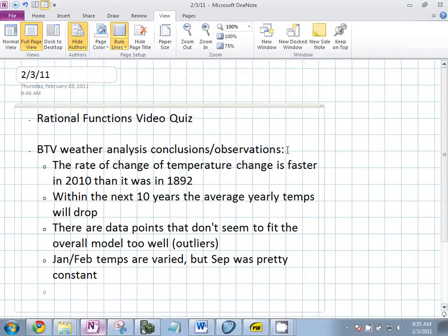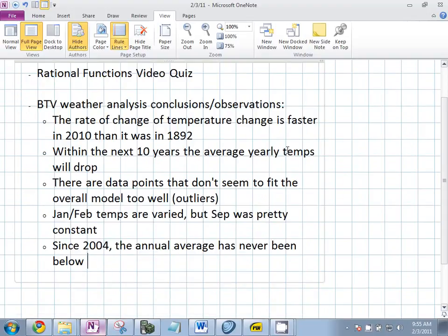Anything else you noticed? Henley. In six years in a row, it hasn't had an annual temperature lower than 45. What years? Start 2004. So, since 2004, the annual average has never been below 45.